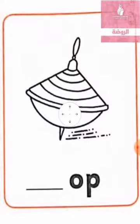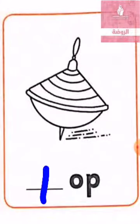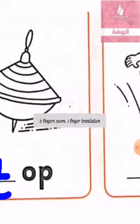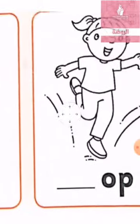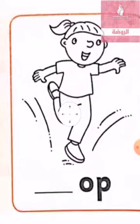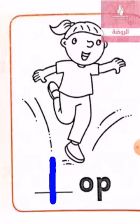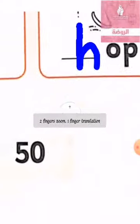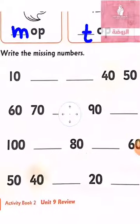Now we will go to the second picture. What is this? It's top. Excellent! Starts with the letter T — top. Very good. Now the third picture is hop. Very good — hop starts with the letter H. Down, up, round. Very good!